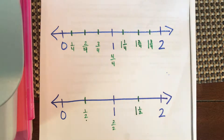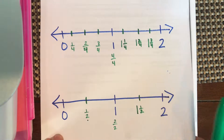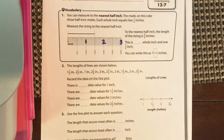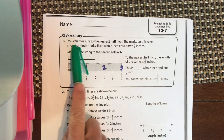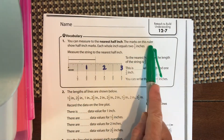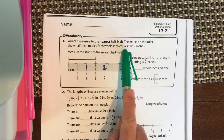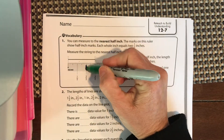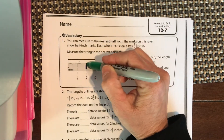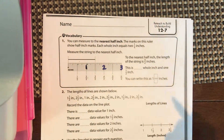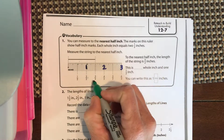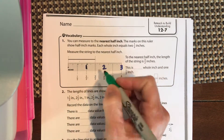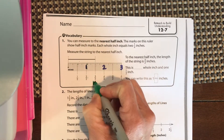You can measure to the nearest half inch. The marks on this ruler show half-inch marks. Each whole inch equals two half inches — so to get to whole number one, a half inch plus a half inch is two halves, which is one whole. Then we have three halves, four halves, five halves, six halves.